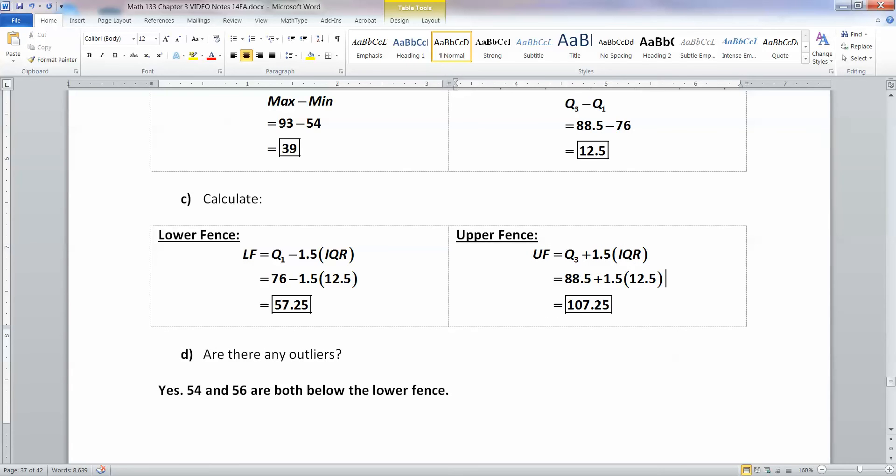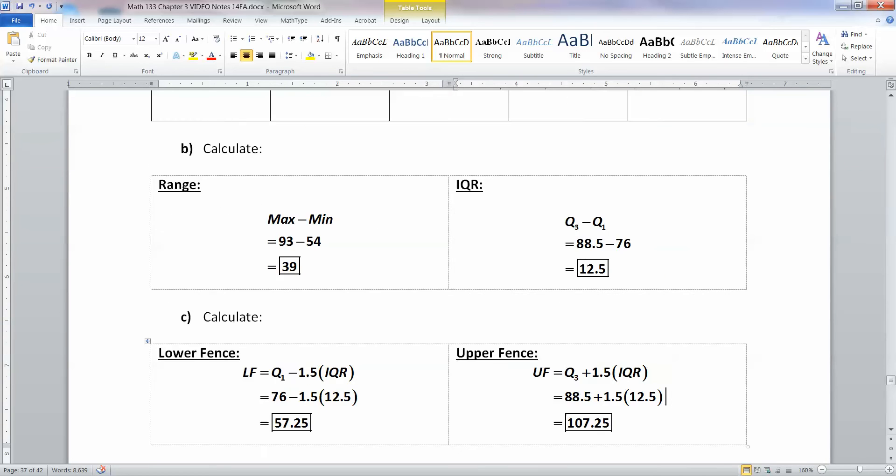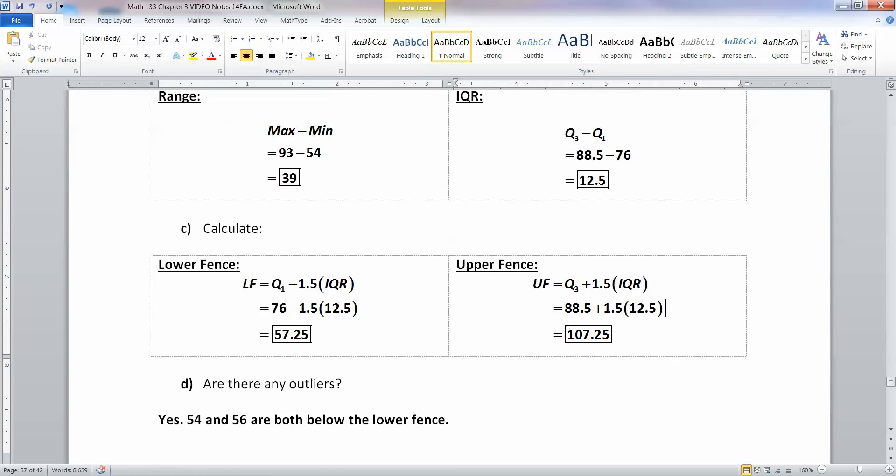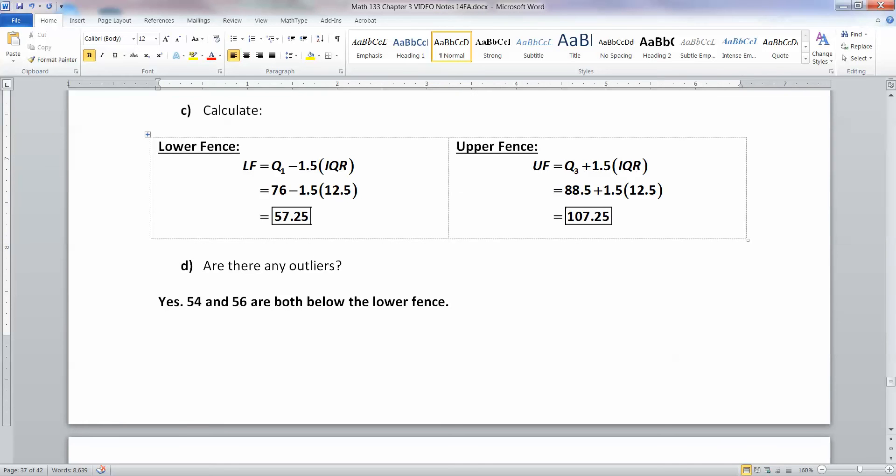I know all of this is review, but this is the kind of thing that you could be asked to do on an exam, for example, one data set and being asked a variety of questions on the same data set. Are there any outliers? Yes, indeed, because if you have anything lower than the lower fence or higher than the upper fence, it's an outlier, which means 54 and 56 are both outliers.